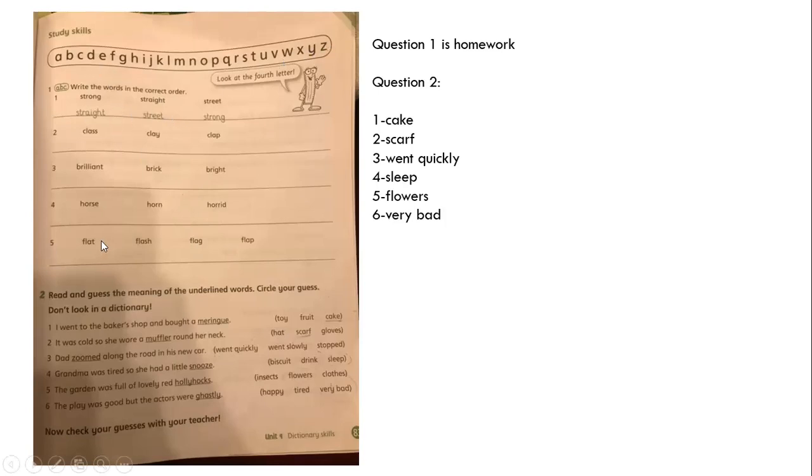Question number two, read and guess the meaning of underlined words. Circle your guess. Do not look in a dictionary. Look here, I went to the baker shop and bought a meringue. What are we going to buy from a baker shop? Toy, fruit or cake? Sure, cake.